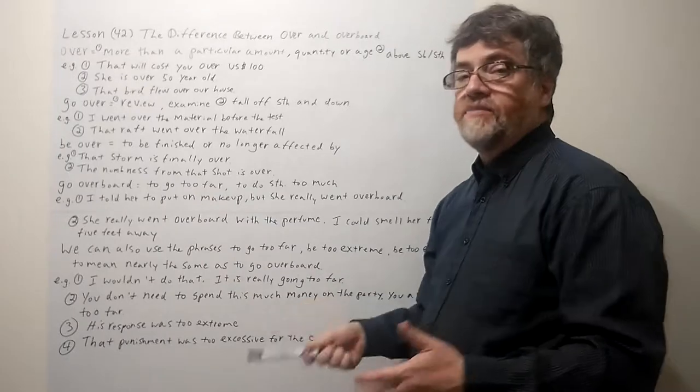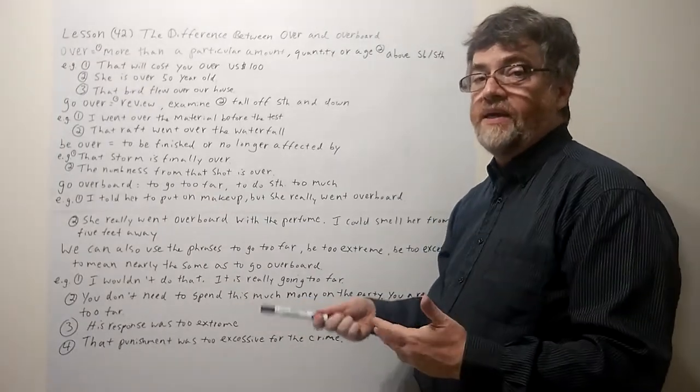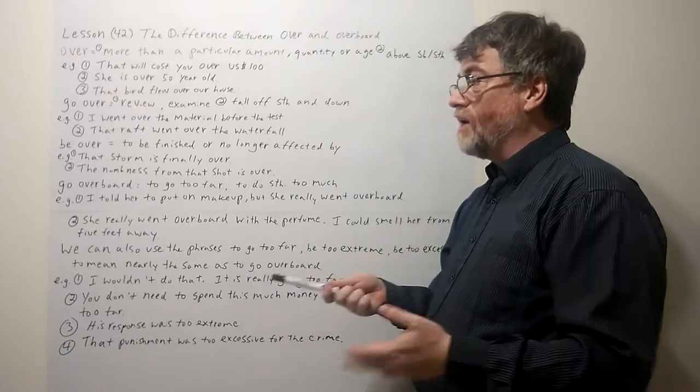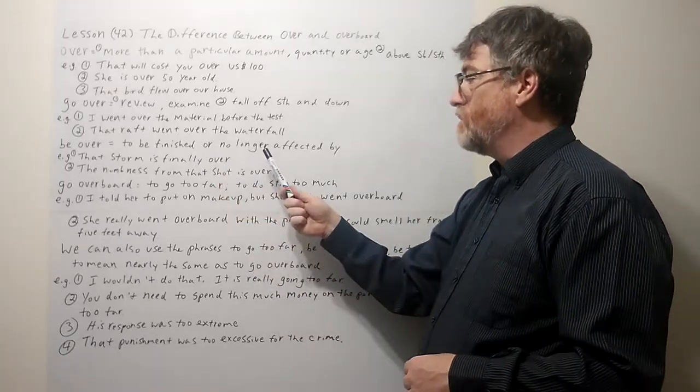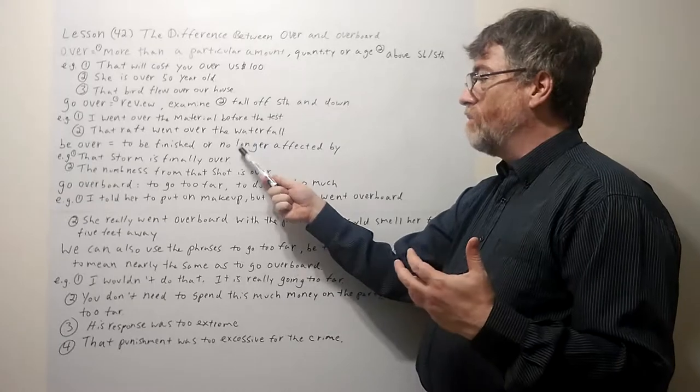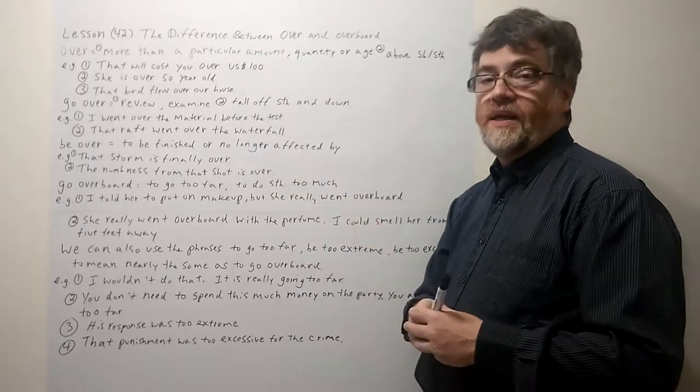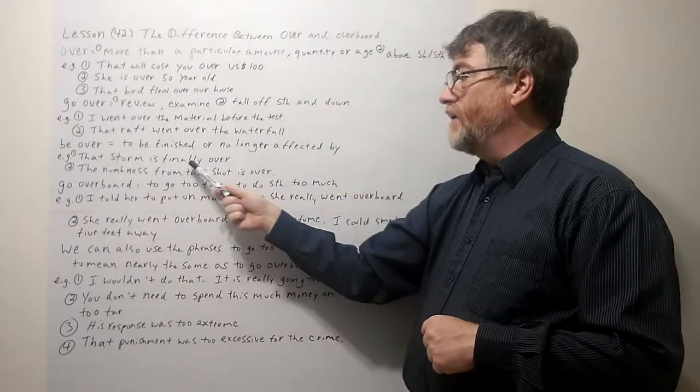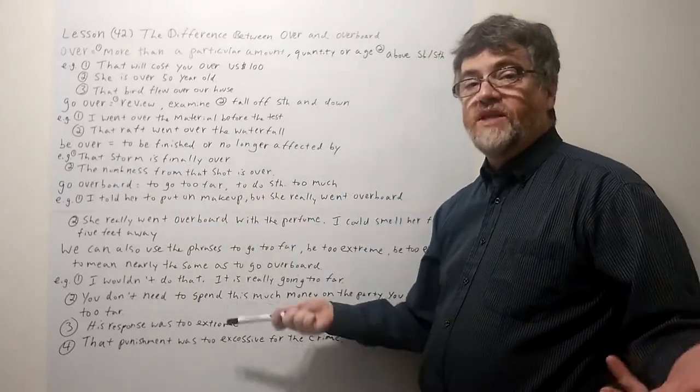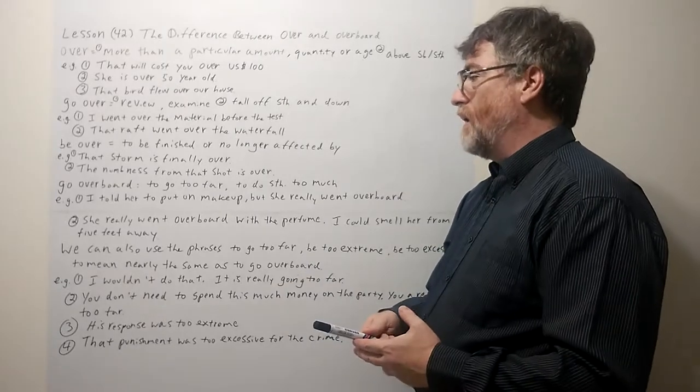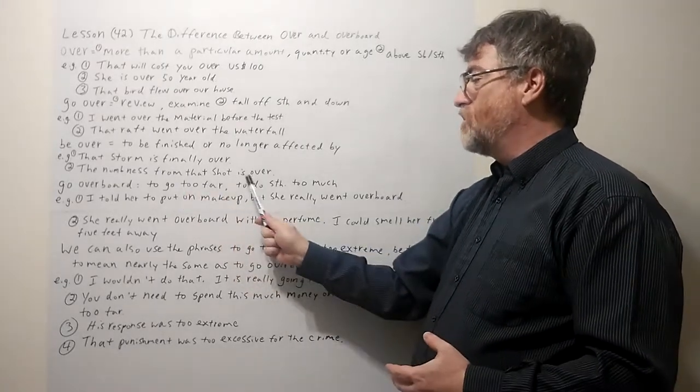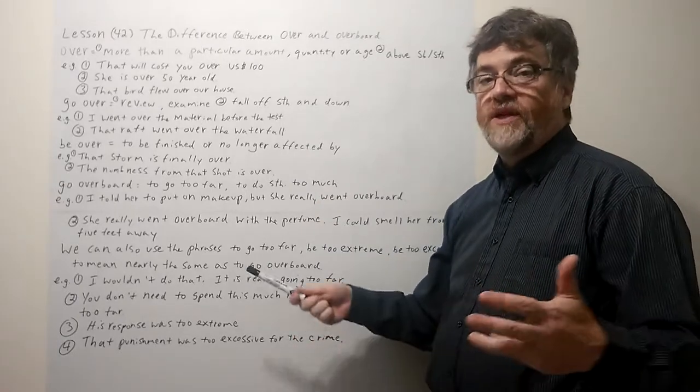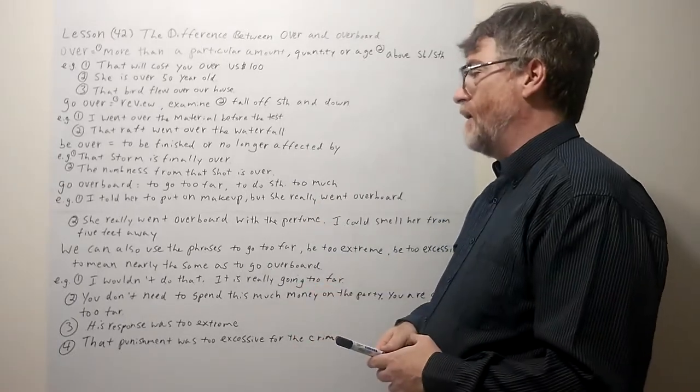Let's look at be over, because sometimes students will use the verb to be with it to try to mean the same thing. To be over as a verb phrase could mean to be finished or to no longer be affected by something. Let's look at the example. We say that storm is finally over. That storm is finally finished. The numbness from that shot is over. Here you're not affected by the numbness anymore. Maybe you feel normal now.